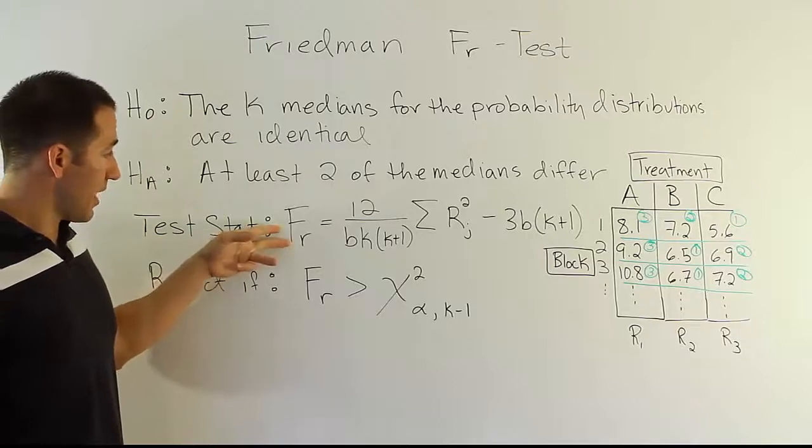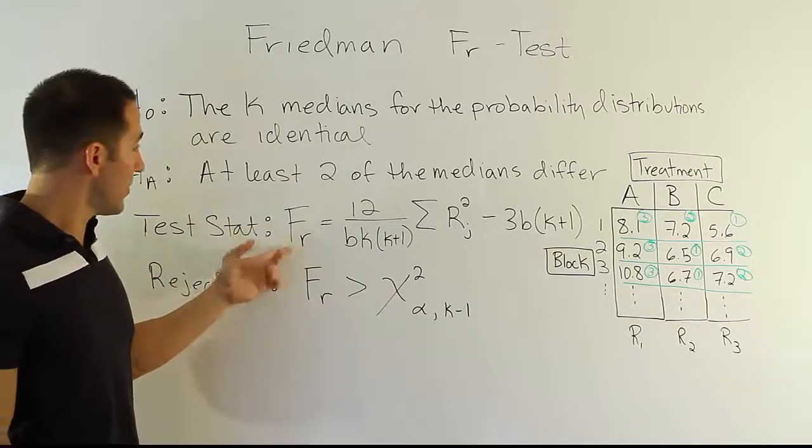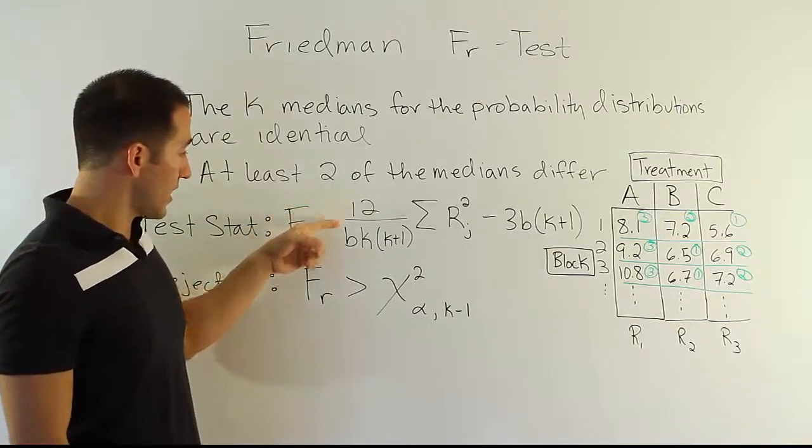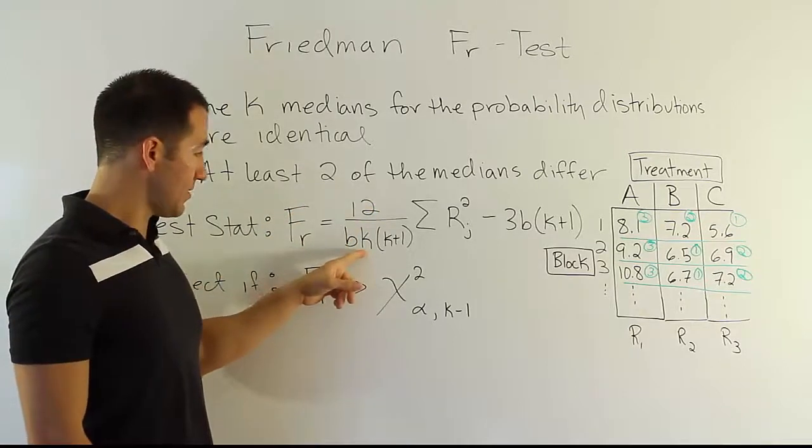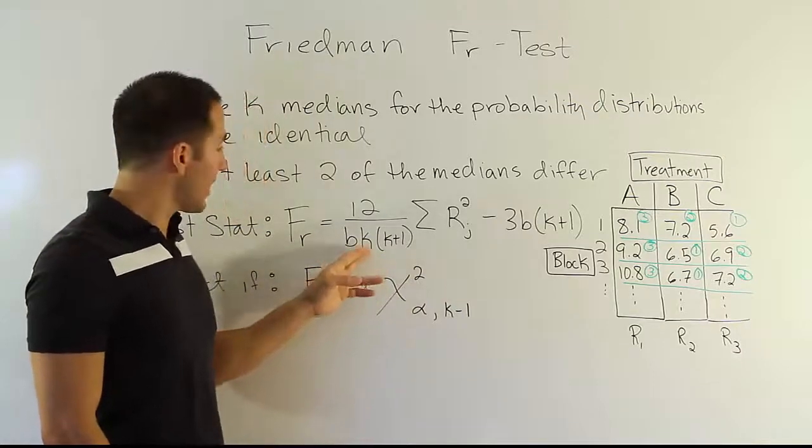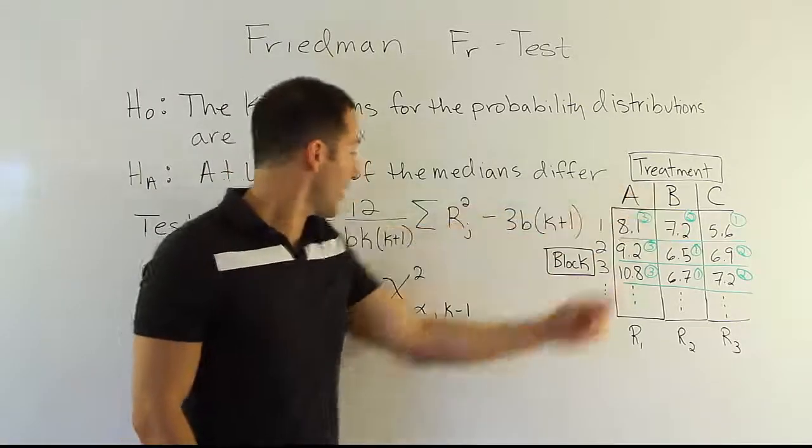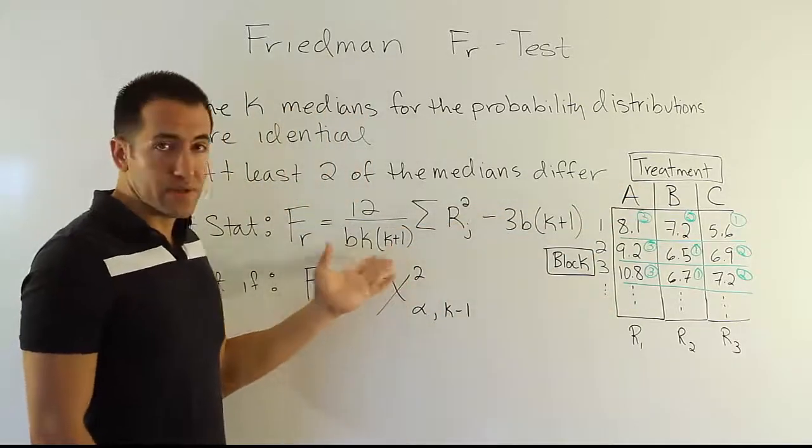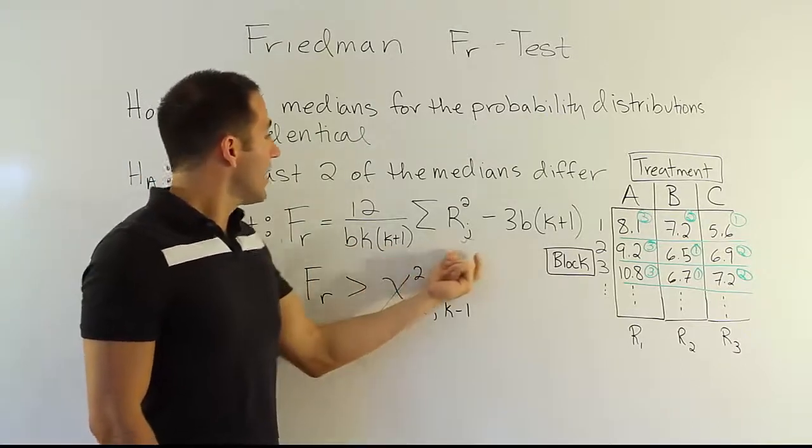Your test stat is going to be FR, FR for Friedman. And then 12, which is a constant, divided by B times K. Now B is the number of blocks you have. So however many subjects we have, that'd be that. K is the number of treatments. In this case, 3. K plus 1, of course, just the 3 plus 1 in our example. Then we have this.